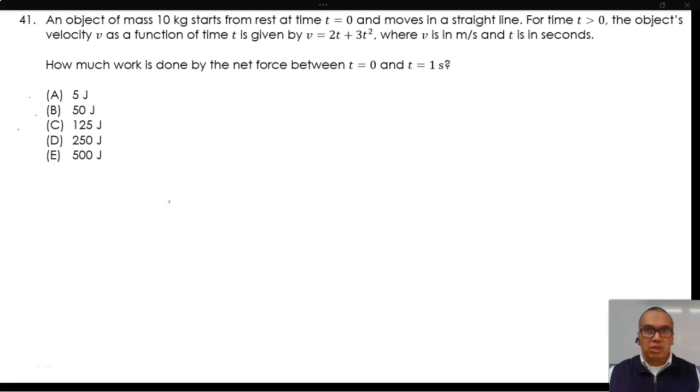An object of mass 10 kilograms starts from rest at time t equals 0 and moves in a straight line. For time t greater than 0, the object's velocity v as a function of time t is given by v equals 2t plus 3t squared, where v is in meters per second and t is in seconds. How much work is done by the net force between t equals 0 and t equals 1 second?